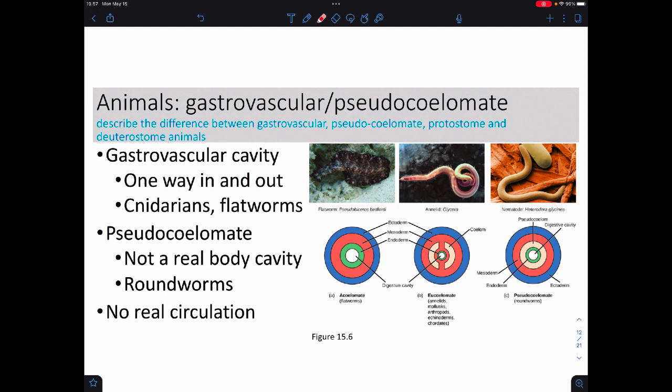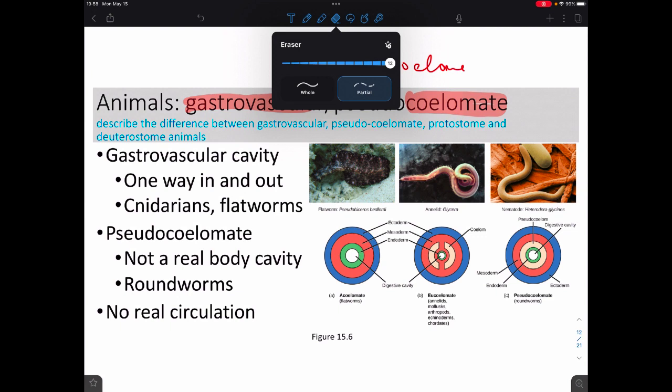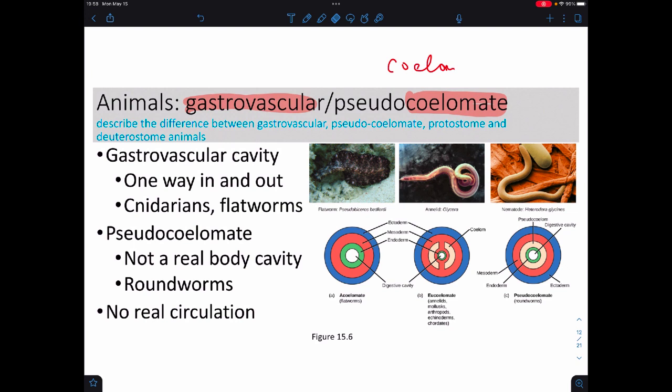From here, what we start worrying about when we classify the animals is whether or not they happen to have a gastrovascular cavity, or if they actually have a body cavity. A coelom turns out to be a body cavity. So, a coelom is a body cavity, and there's a proper body cavity, and there's a fake one. And it turns out we classify everything based on do you have a body cavity or not.